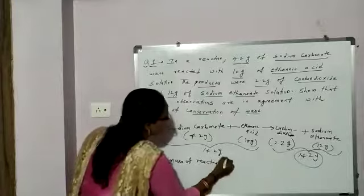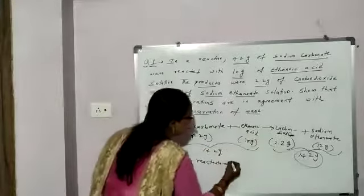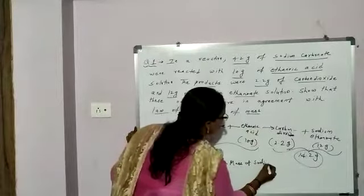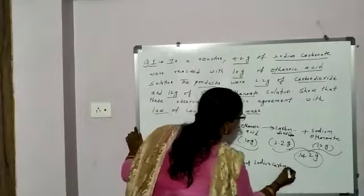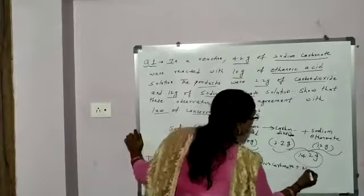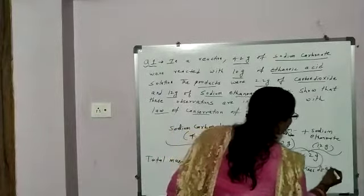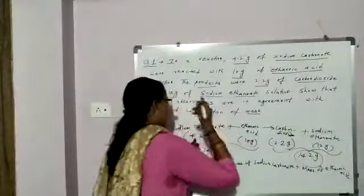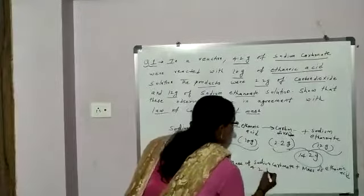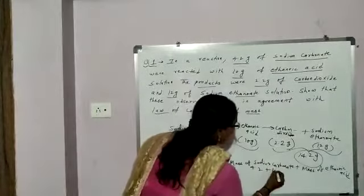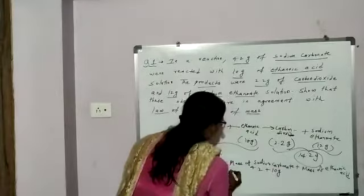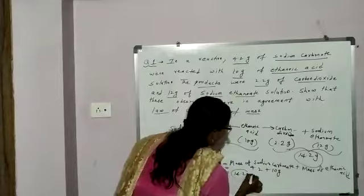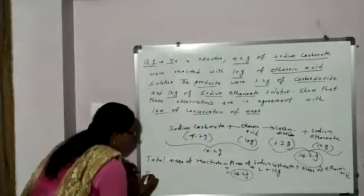Total mass of reactants equals mass of sodium carbonate plus mass of ethanoic acid, which is 4.2 grams plus 10 grams, giving 14.2 grams. This is the mass of reactants. Next, total mass of products: